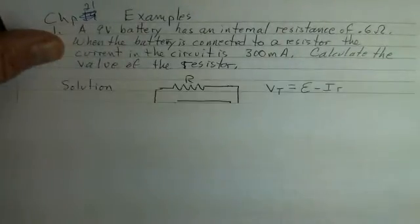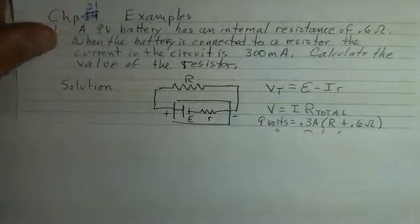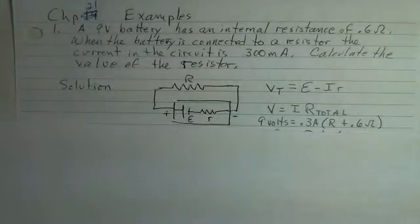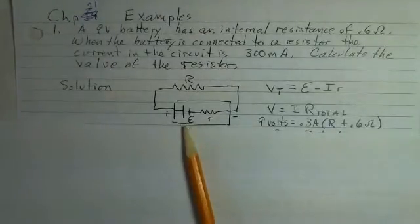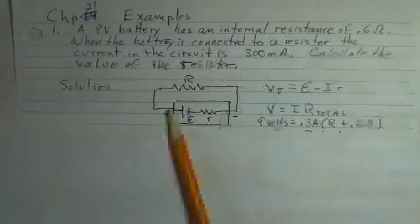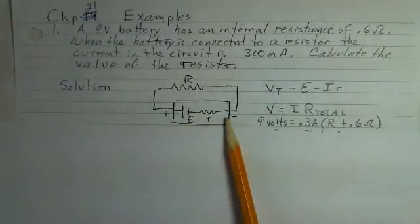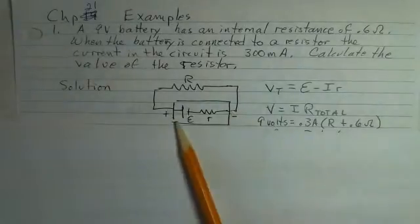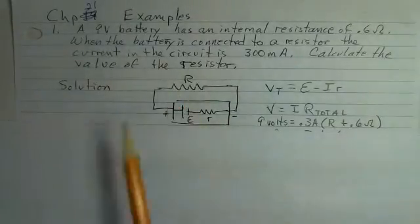To help us solve this problem, let's sketch out the circuit. We have our 9-volt battery, the EMF would be 9 volts. It has internal resistance. The square rectangle here represents the shell of the battery. We have our external resistance R.